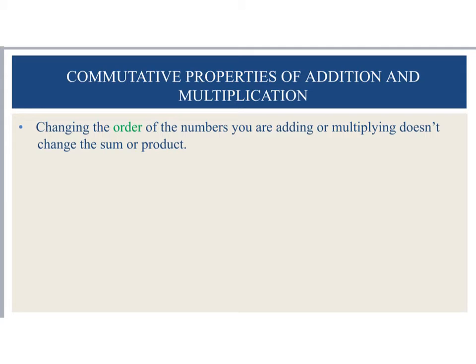If you recall, we have what we call the commutative properties of addition and multiplication. What this says is that changing the order of the numbers you are adding or multiplying doesn't change the sum or the product. So I can say 3 plus 1 is equal to 1 plus 3, and it doesn't matter which way I add those, I'm going to get the same thing. Likewise, I can say 5 times 6 is equal to 6 times 5, and I'll get the same answer regardless of which order I add or multiply.